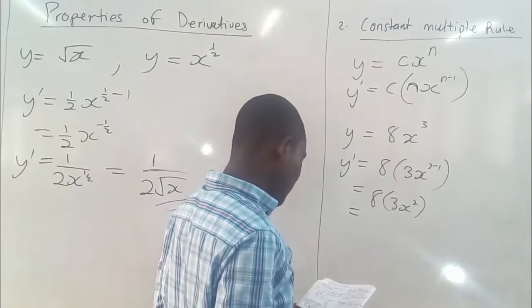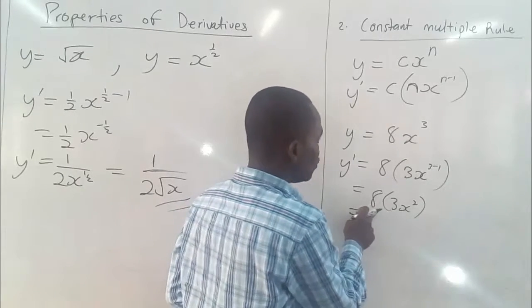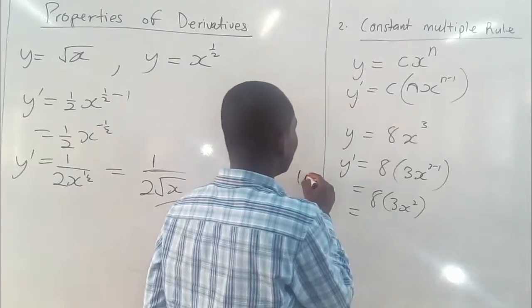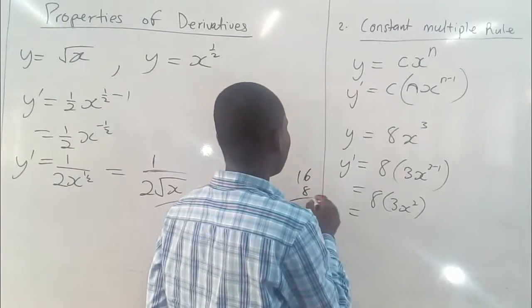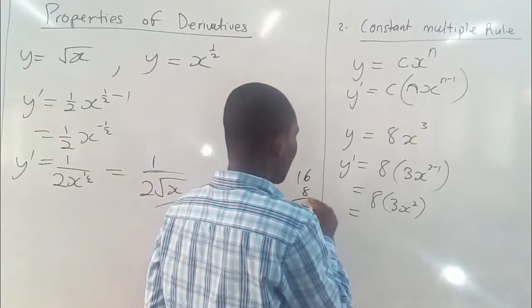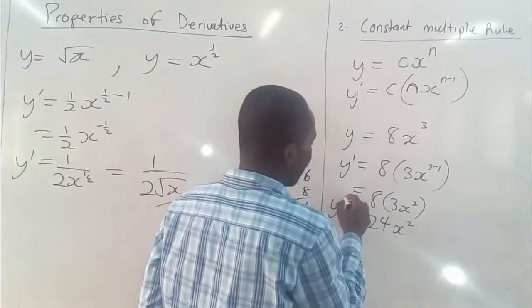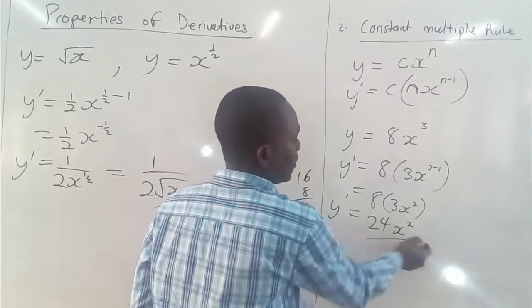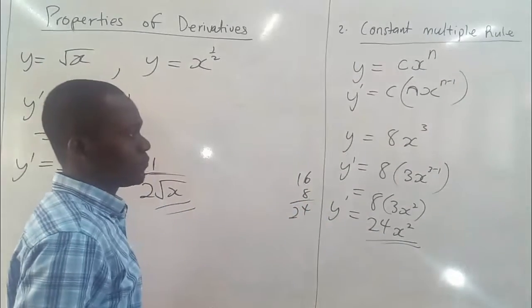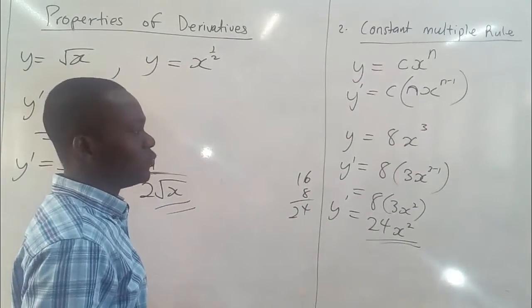Now we do our simplification by expanding the bracket, multiplying 8 by 3. And what does 3 times 8 give us? That gives us 24. So we are having 24x squared here to be our final derivative. That's how we do it.